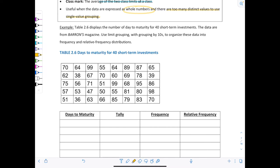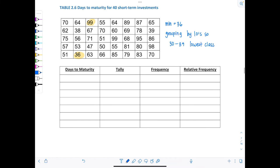Let's look at an example. Table 2.6 displays the number of days to maturity for 40 short-term investments from Barron's Magazine. Use limit grouping with grouping by tens to organize these data into frequency and relative frequency distributions. They told us we need to group by tens. Always start off by identifying the min and the max for your data set. The min value is 36 and the max is 99.